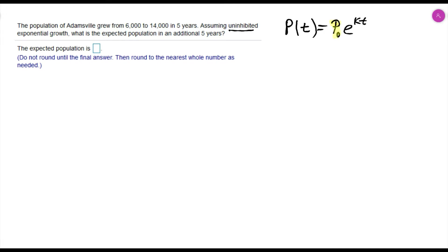This P₀, or P naught, is going to stand for our starting population or initial population. The k is our growth or decay rate.